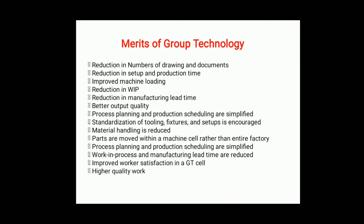The first advantage is a reduction in the number of drawings and documents. Group technology also gives us reduction in setup and production time. There is improved machine loading, reduction in work-in-process inventory, and reduction in manufacturing lead time. By separating parts into distinct groups, we get more productive time, reduced lead time, and better output quality.